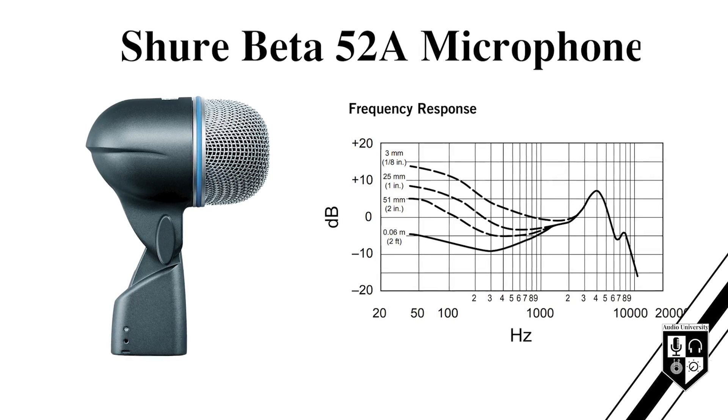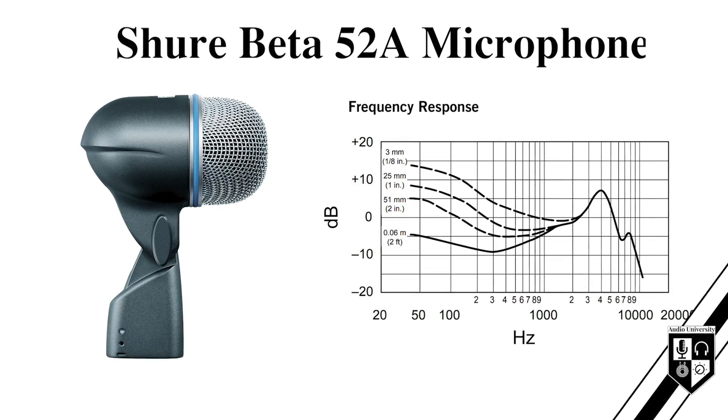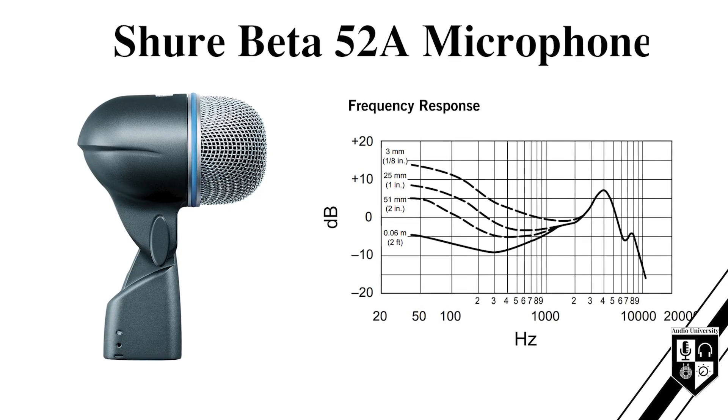Otherwise, I may make mixing decisions based on the frequency response of my listening system, rather than making decisions based on the actual frequency balance of the signal itself. In other situations, I might want a device that doesn't have a flat frequency response. Maybe I'm choosing a microphone that will help me capture a particular sound for a particular instrument. One example of this is the Shure Beta 52 microphone that has a frequency response uniquely tailored to recording kick drums.